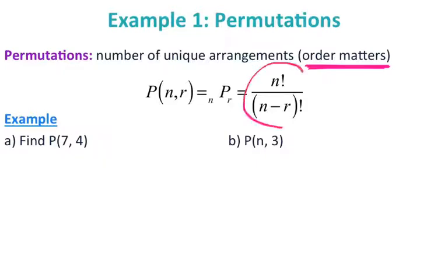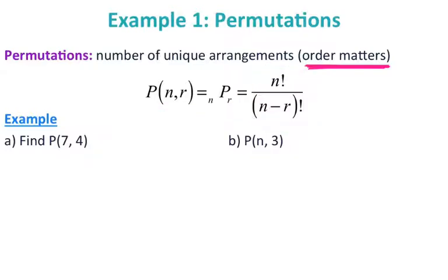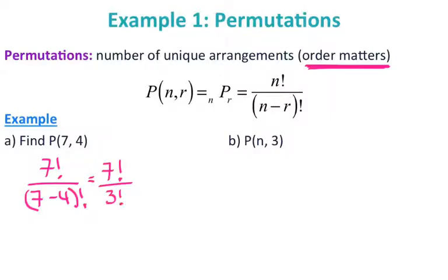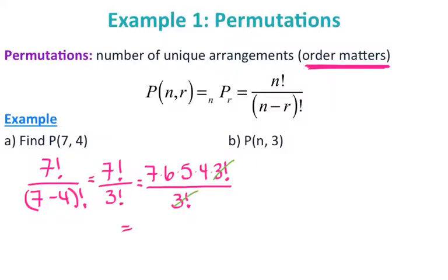Here's your formula for the permutation, and there are two different ways to denote it. For letter A, we're finding the permutation of 7 and 4, so N is 7 and R is 4. That gives us 7 factorial over (7 minus 4) factorial, which is 7 factorial over 3 factorial. Expanding: 7 times 6 times 5 times 4 times 3 factorial. Canceling the 3 factorials leaves 7 times 6 times 5 times 4, which equals 840.